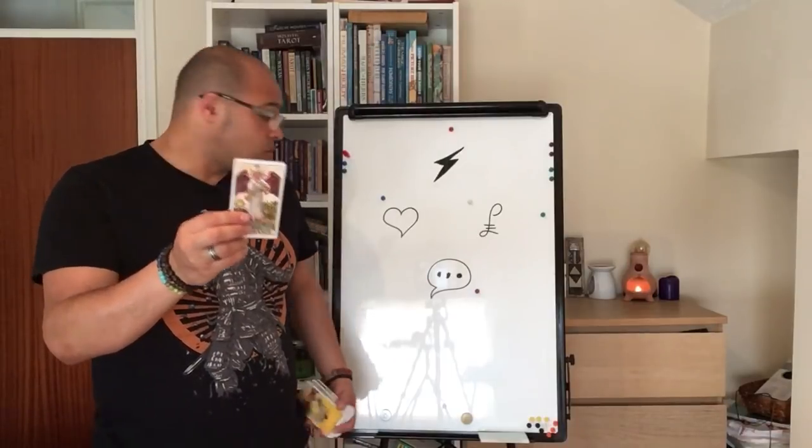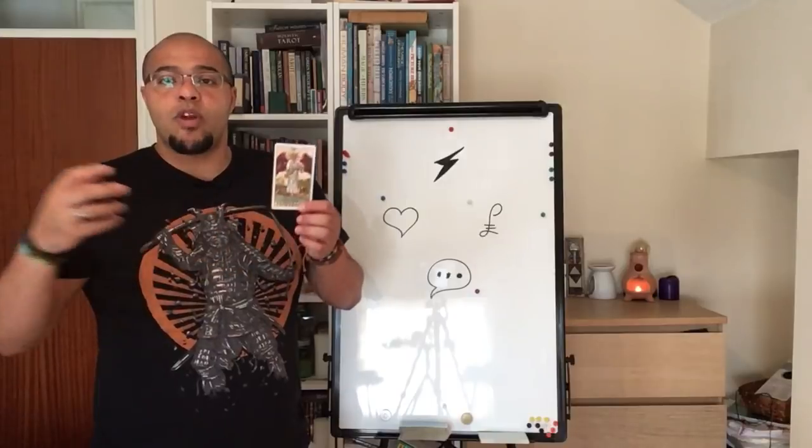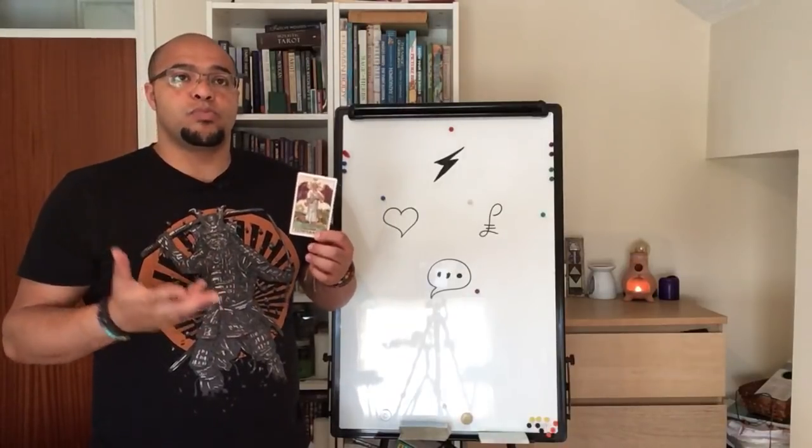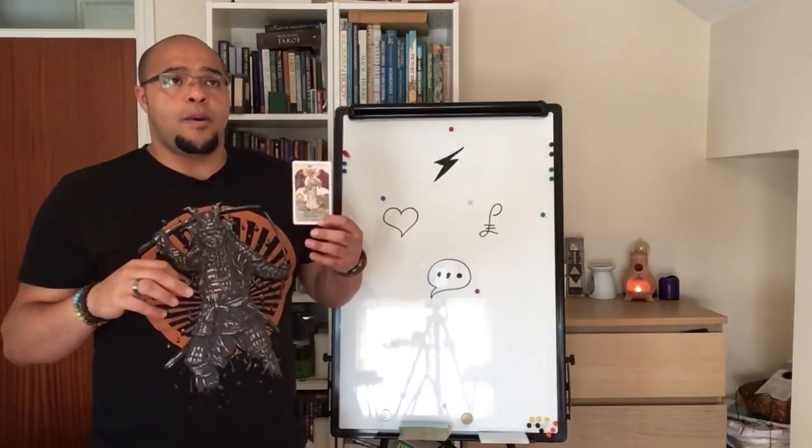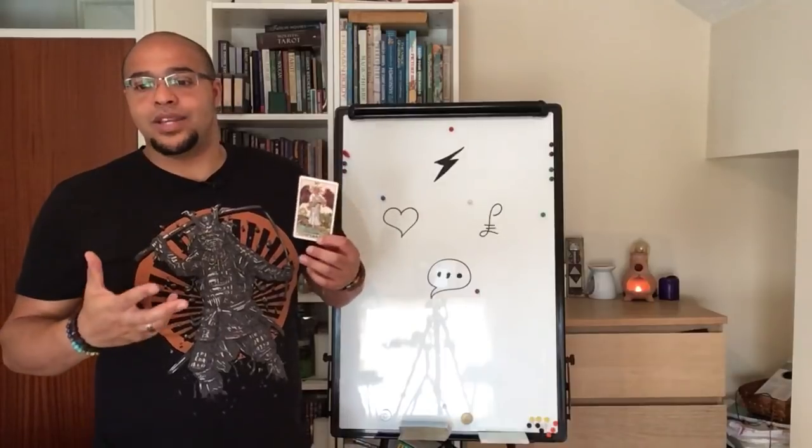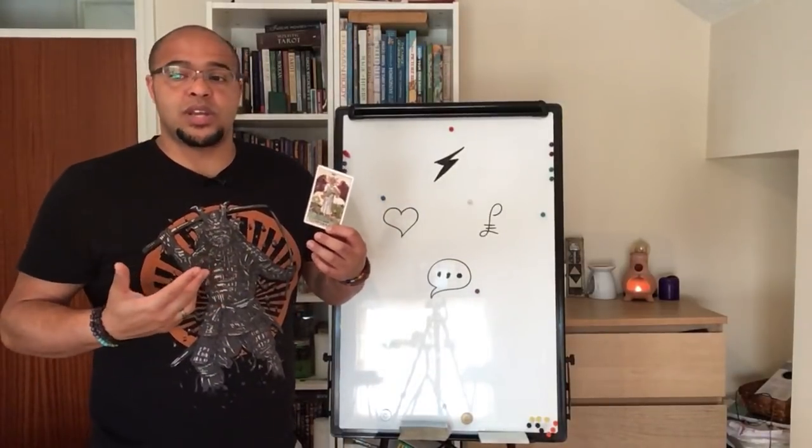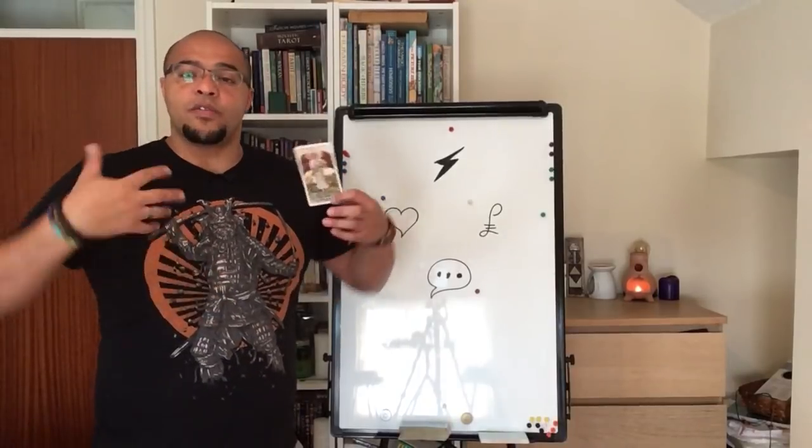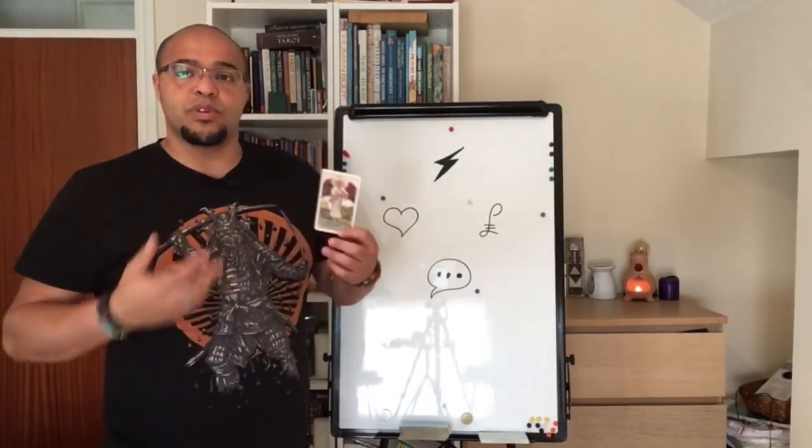So you get the Temperance card. Now this is beautiful because the Temperance card represents patience. It also represents a kind of stillness, but it represents the kind of stillness that comes from patience. The word temperance actually means patience. And when you see the Temperance card, because it's got links to Sagittarius, you're actually being asked to find the deeper meaning in things and therefore go through the process of spiritual alchemy.